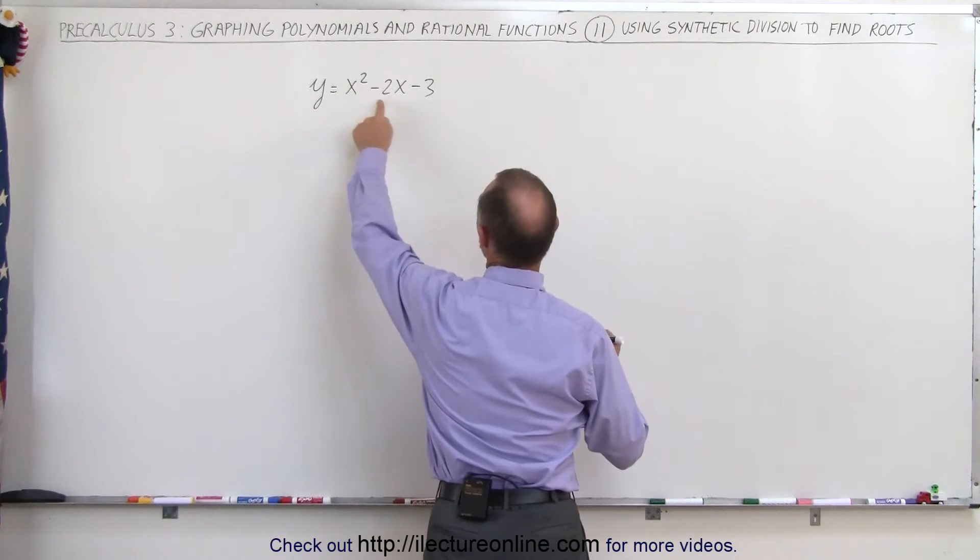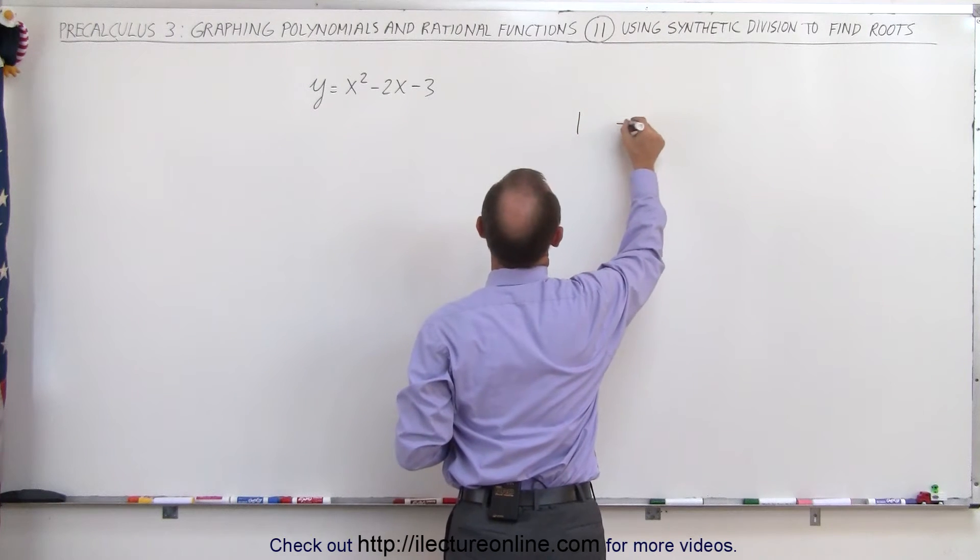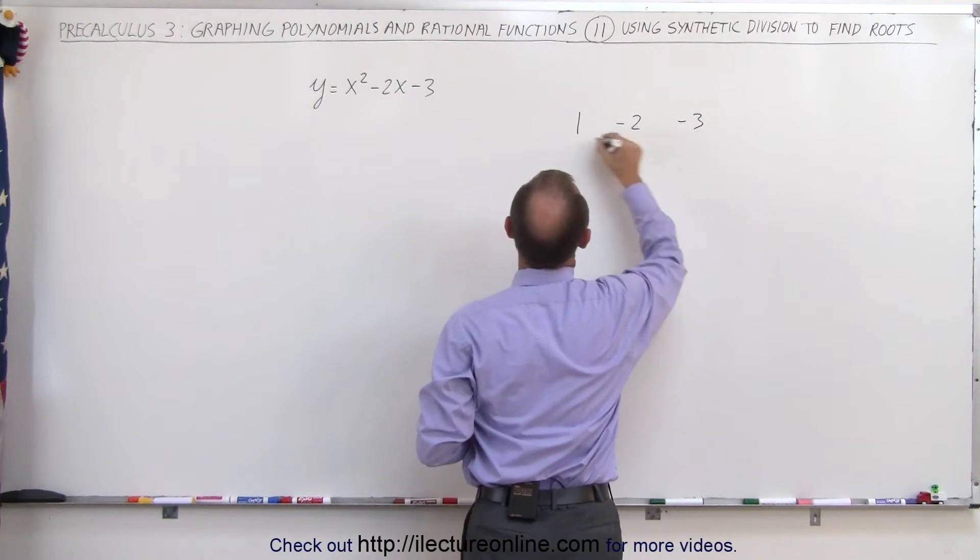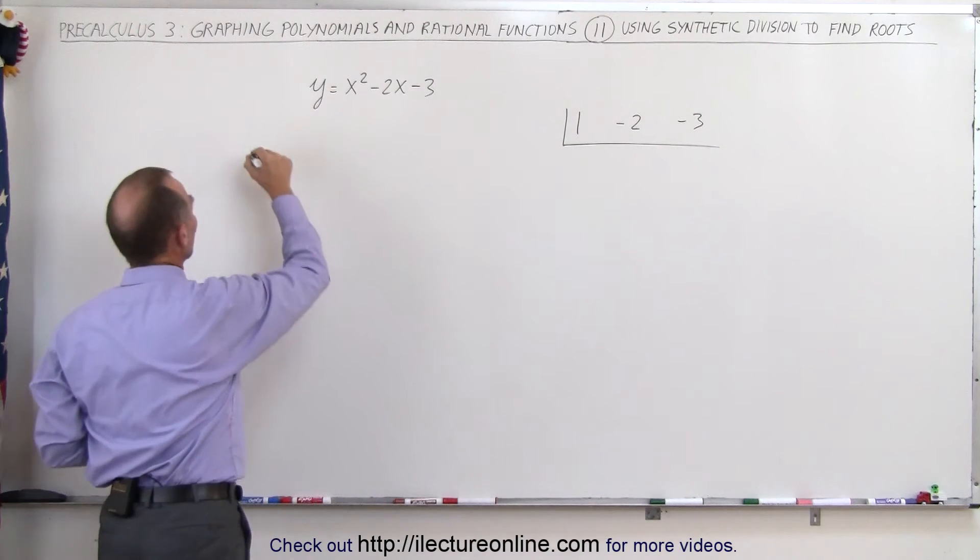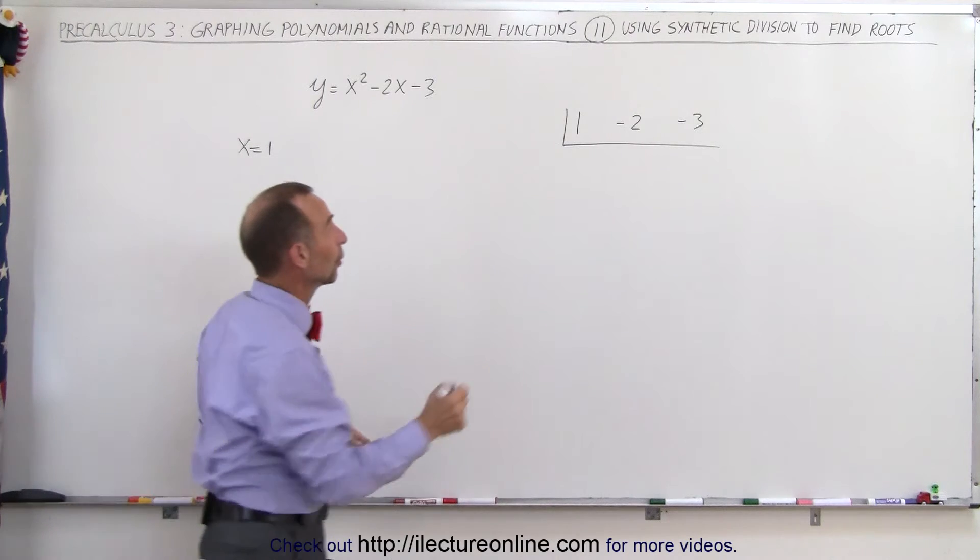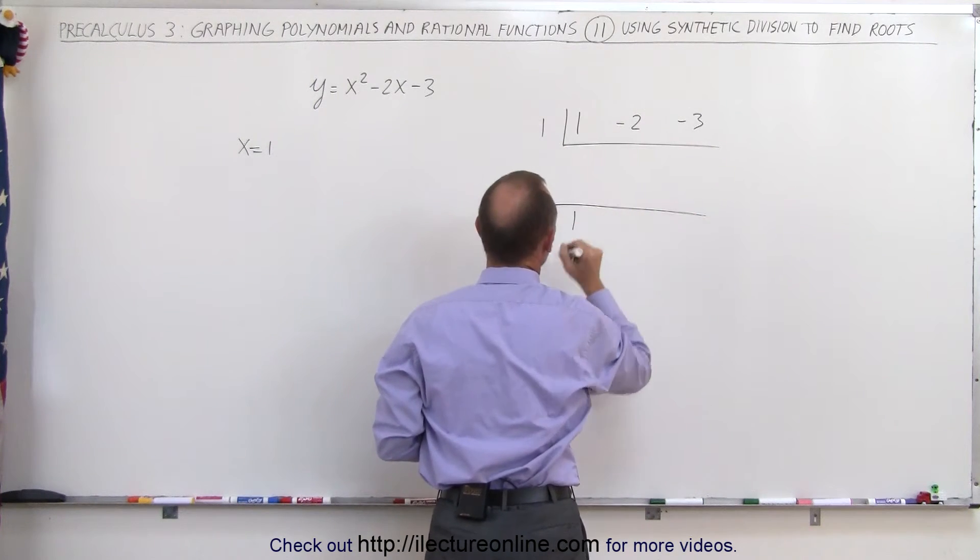So, let's write down the coefficients of the three terms. That's a positive one, a minus two, and a minus three. Draw a line below it like that. And let's try our first root. Let's try x equals one. So we place the number one here. We draw a line down here. We drop the first number down here.